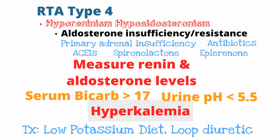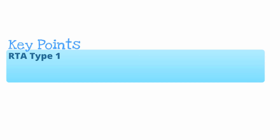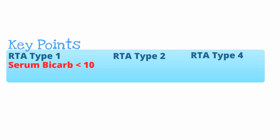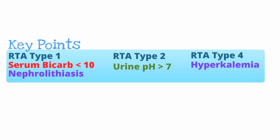Let's break everything down into key points for renal tubular acidosis. There are three clinically significant types: RTA type 1, RTA type 2, and RTA type 4. RTA type 1 is distinctive in that the serum bicarb can be very low — less than 10 — and these patients are prone to developing kidney stones. In RTA type 2, the urine pH is very high, usually greater than 7. Finally, a distinctive feature of type 4 is hyperkalemia or elevated potassium.